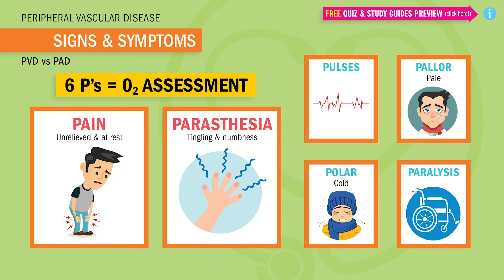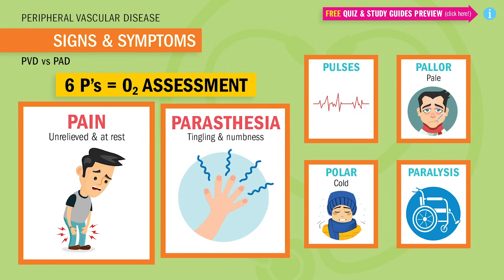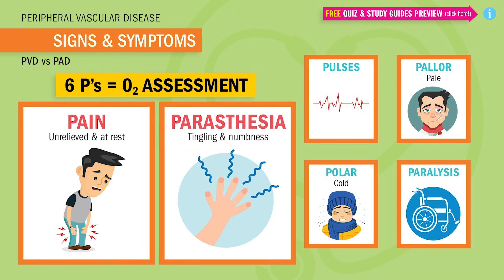So write this down. The two most important Ps that will be on your test and usually always come up in prioritization questions. Number one is pain — but not any kind of pain. Unrelieved pain at rest. Big keyword right there. When claudication is unrelieved at rest, this means PAD has moved into the most severe stages. And number two is paresthesia — fancy word for tingling and numbness. It's like when your leg falls asleep, but this is a way more severe version, like the leg is holding its breath for a long time, or just being choked out.